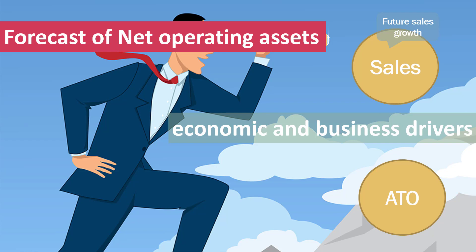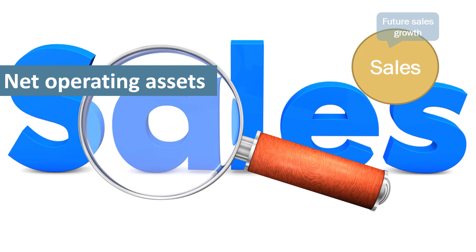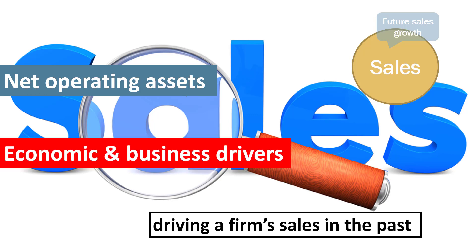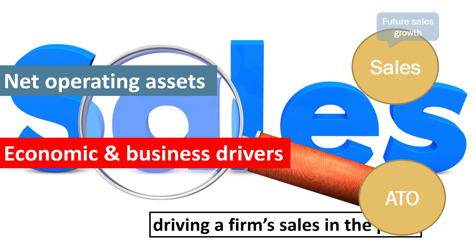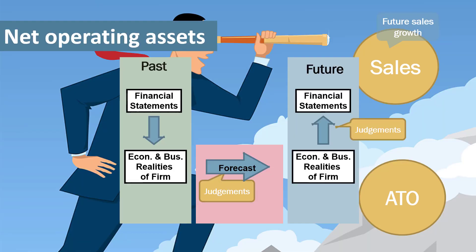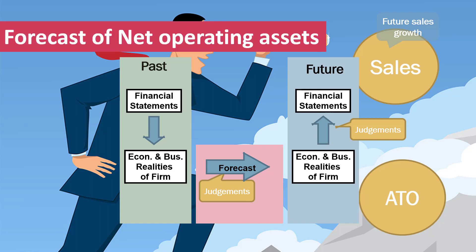Usually a key aspect we wish to examine is a firm's sales. We can analyze what has been driving a firm's sales in the past. However, what was driving a firm's sales in the past has little direct relevance to the value of a firm. We need to engage with and make judgments about how the economic and business drivers of a firm's sales and asset turnover could be expected to change in the future. And we need to be able to convert these judgments into numbers — into the future accounting drivers of net operating assets — and then form a credible, convincing, and intelligent forecast of net operating assets.